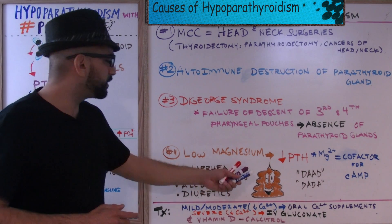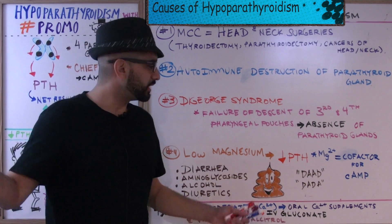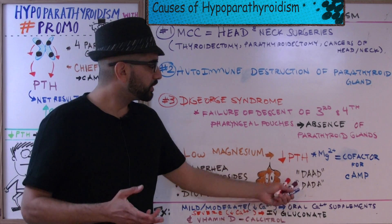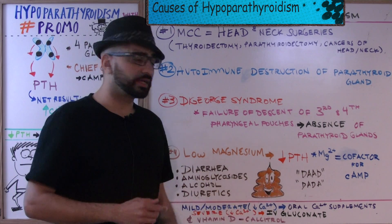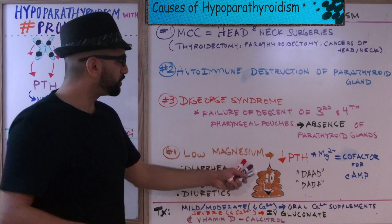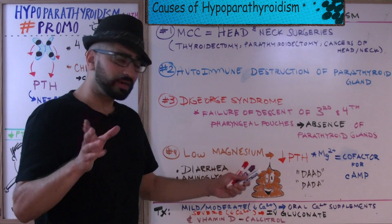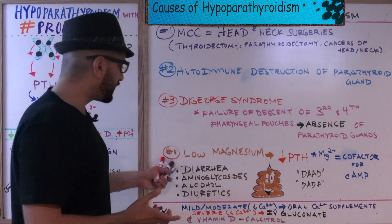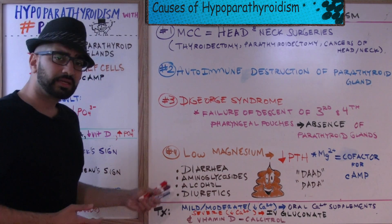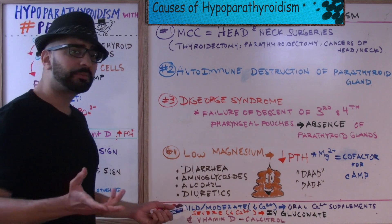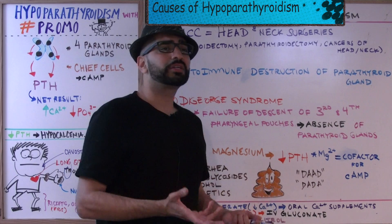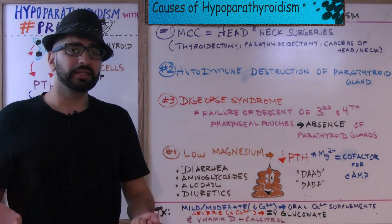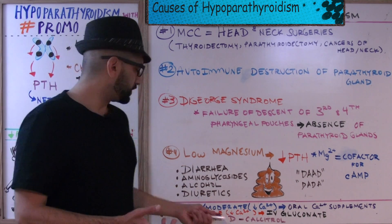I drew a little cartoon here. The mnemonic for causes of low magnesium is DAD or DATA: diarrhea, aminoglycosides, alcohol, and diuretics. Dads like to drink alcohol, which gives them diarrhea. Dads don't like to take medications such as aminoglycosides. And after dads drink lots of alcohol, they need to urinate — hence diuretics.